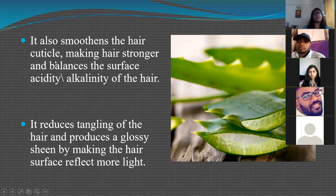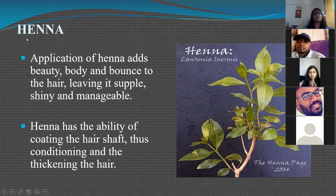Aloe vera smoothens the hair cuticle, makes the hair stronger, balances the pH of the hair, reduces tangling, and produces a shiny or glossy sheen by making the hair surface reflect more light. Henna (mehendi) adds beauty and bounce to the hair, making it supple, shiny, and manageable.